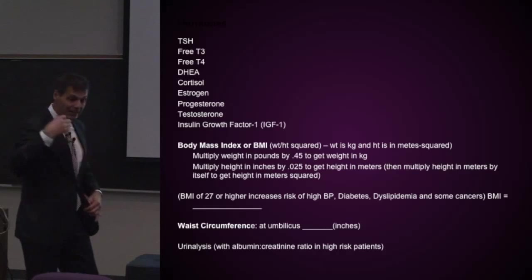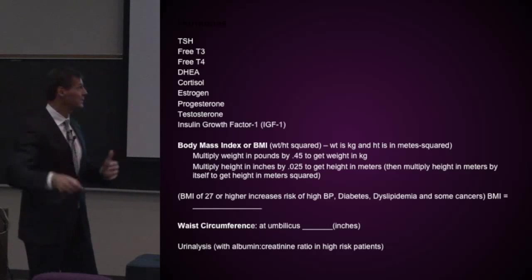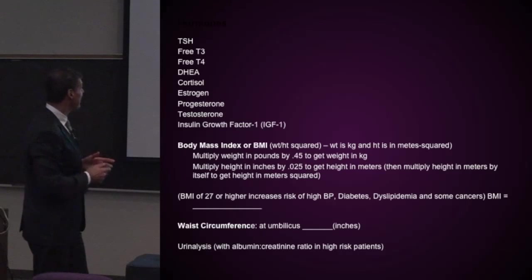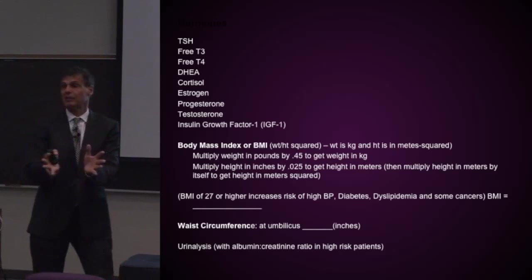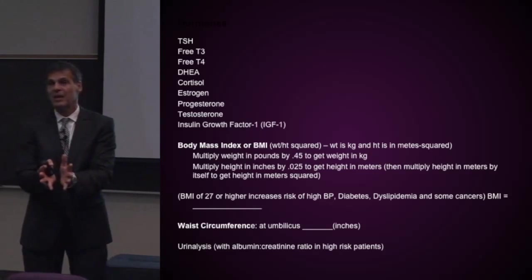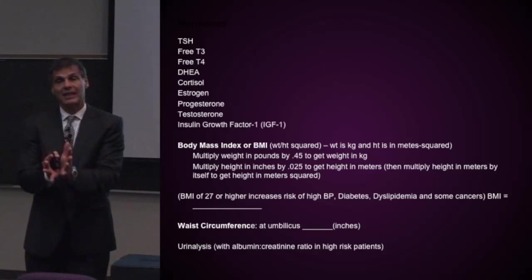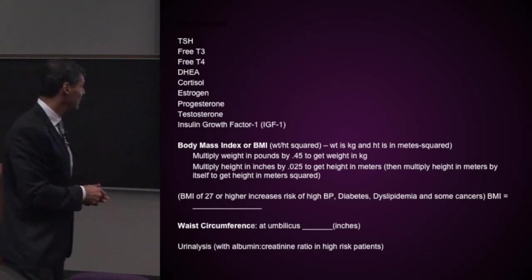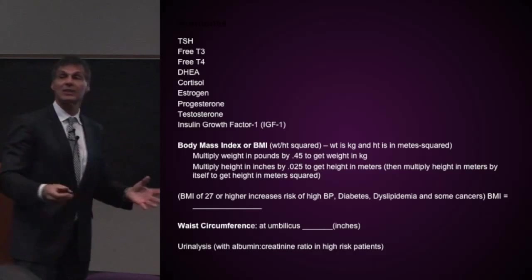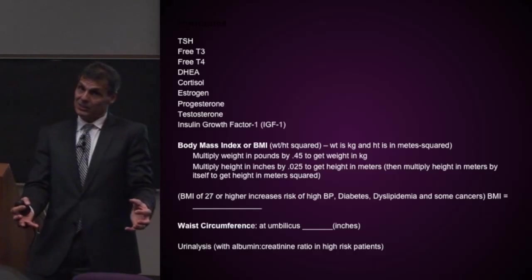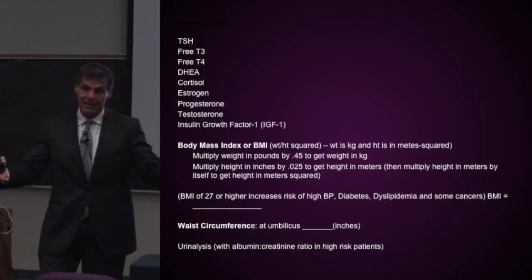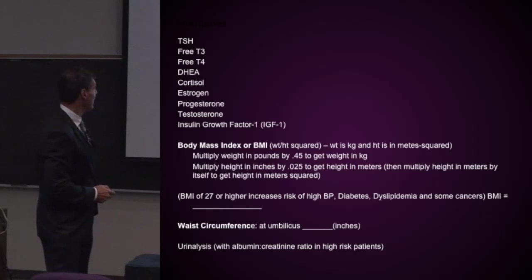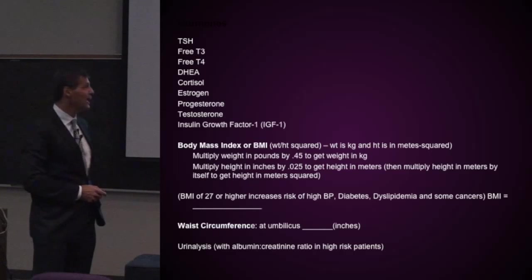My brain is always thinking: how do I optimize this clinical picture? What's their body mass index? What's the waist circumference? And I would do a standard urinalysis, as most doctors would. If there's any hint of kidney damage, then doing the albumin-to-creatinine ratio makes sense because it gives you an index of kidney function and level of impairment.